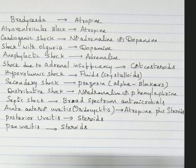Cardiogenic shock: noradrenaline or dopamine. Shock with oliguria: dopamine. Anaphylactic shock: adrenaline. Shock due to adrenal insufficiency: corticosteroids. Hypovolemic shock: fluids (crystalloids). Secondary shock: prazosin (alpha blockers). Distributive shock: noradrenaline or phenylephrine. Septic shock: broad-spectrum antimicrobials. Most shocks use adrenergic drugs because heart rate and blood flow are reduced.